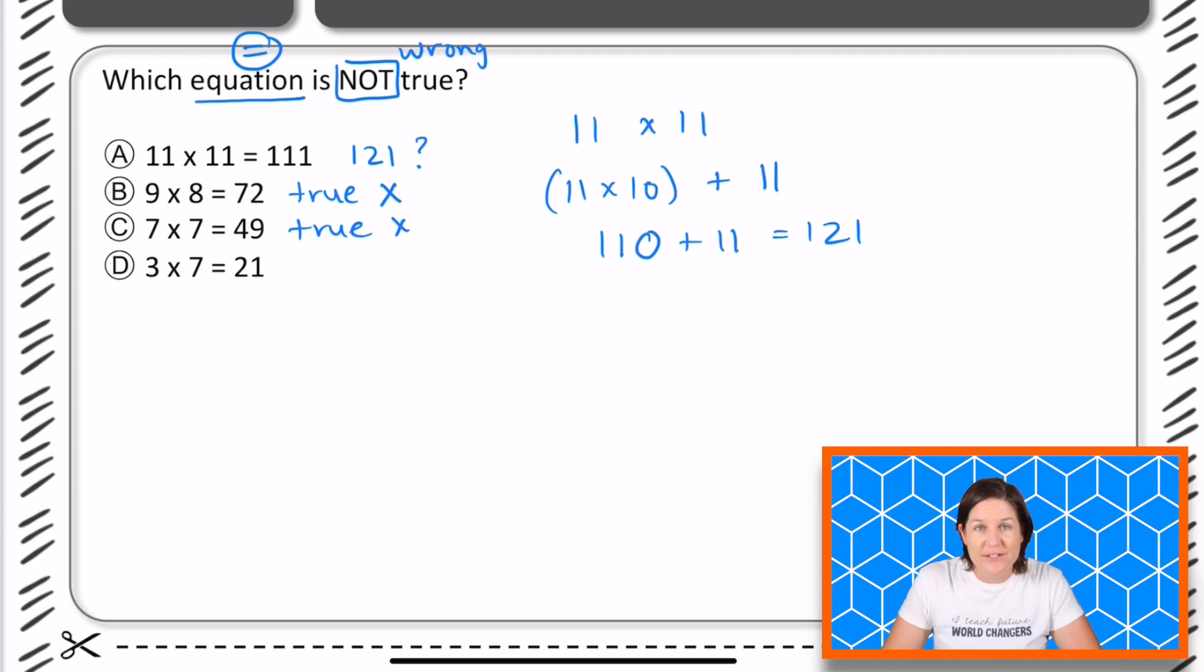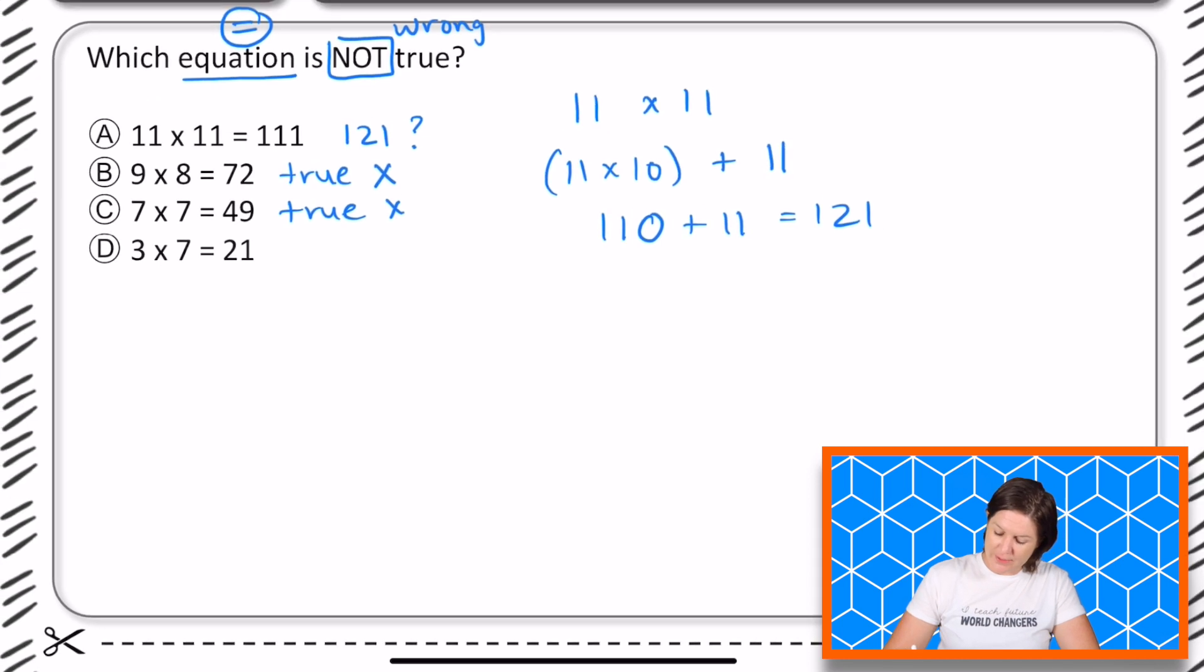And what is three times seven? Is that 21? Yeah, it is. Three times seven is 21. This is true.